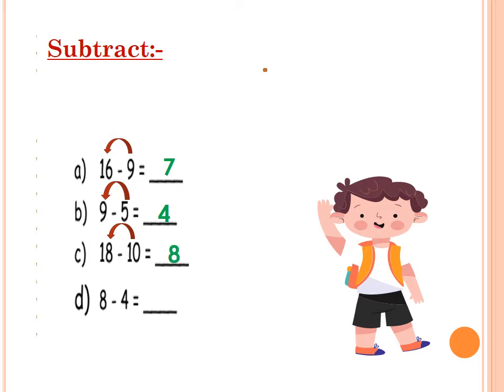8 minus 4 equals what? Count after 4 to reach 8: 4. Super, super, super boys and girls, Primary 2.